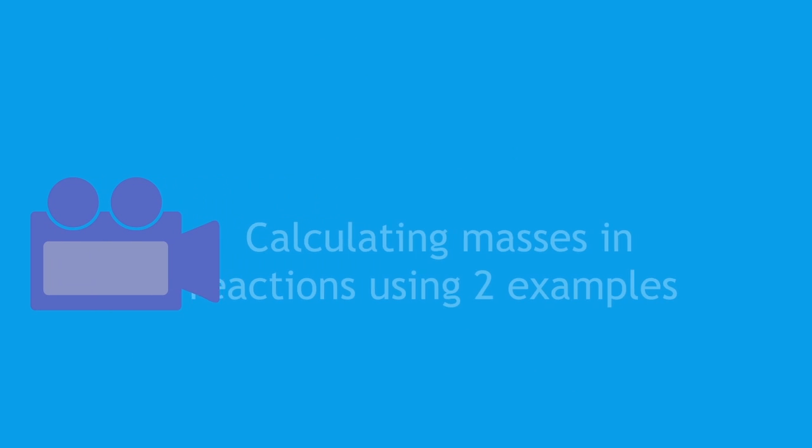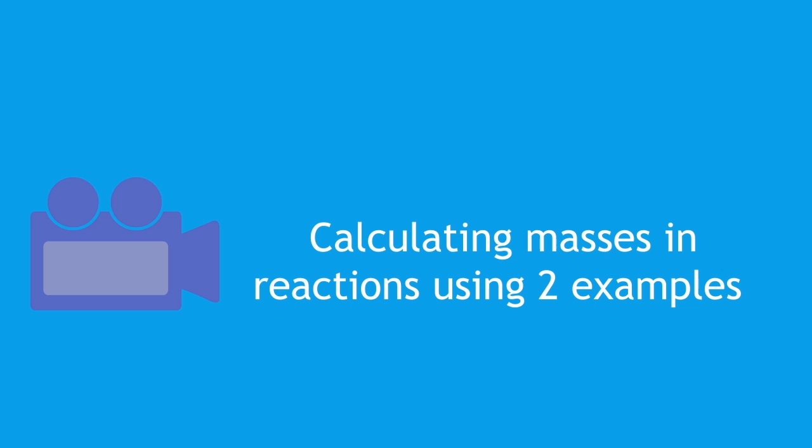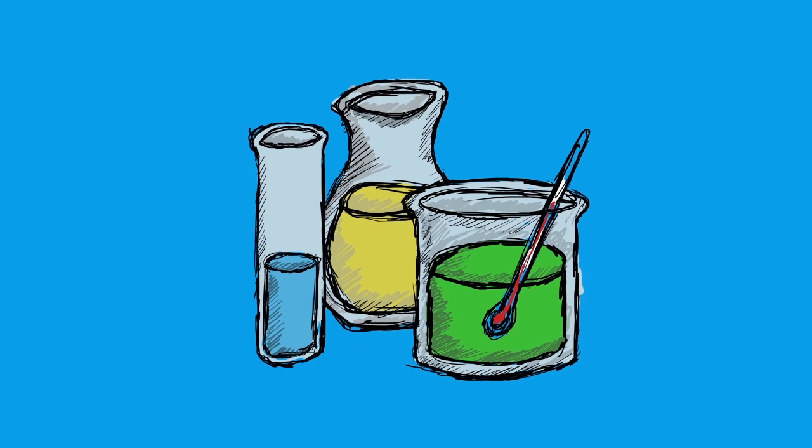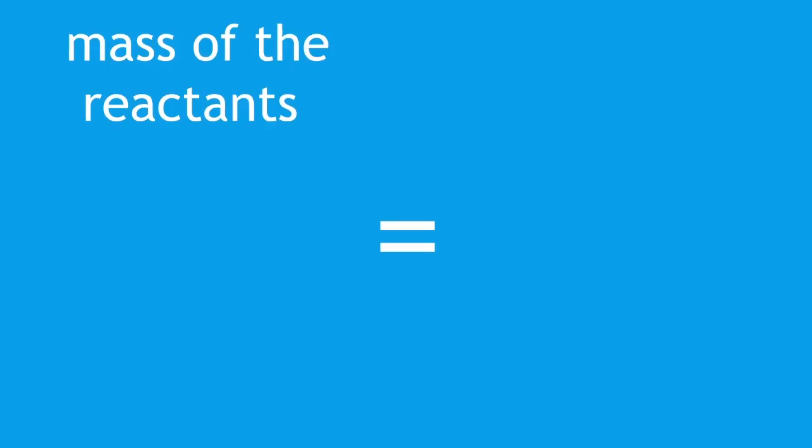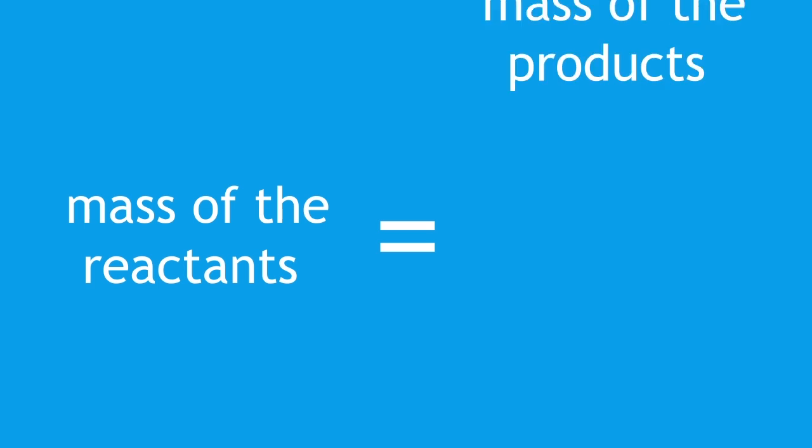In this video we are going to learn about calculating masses in reactions using two examples. There is an important rule in chemistry: the mass of a reaction is always conserved. This means that the mass of the reactants must equal the mass of the products.